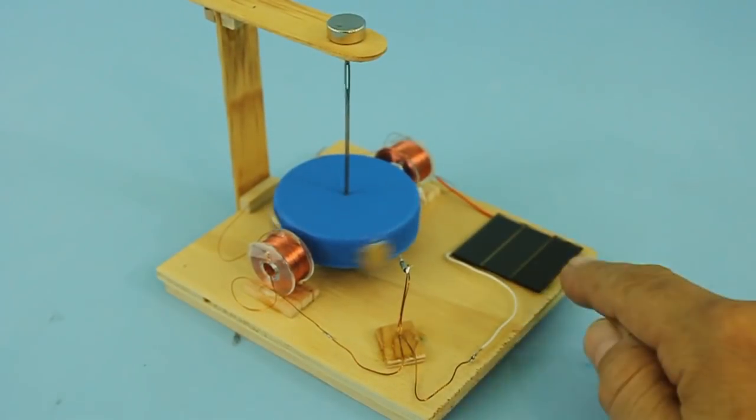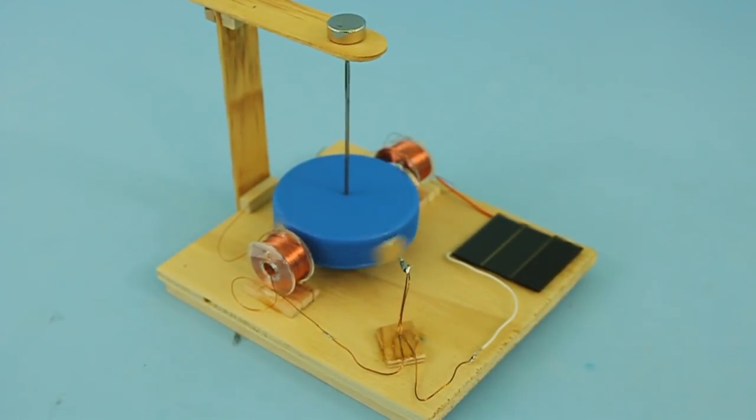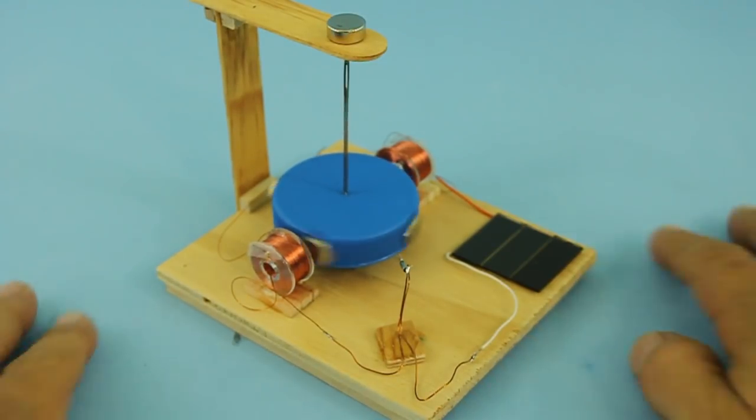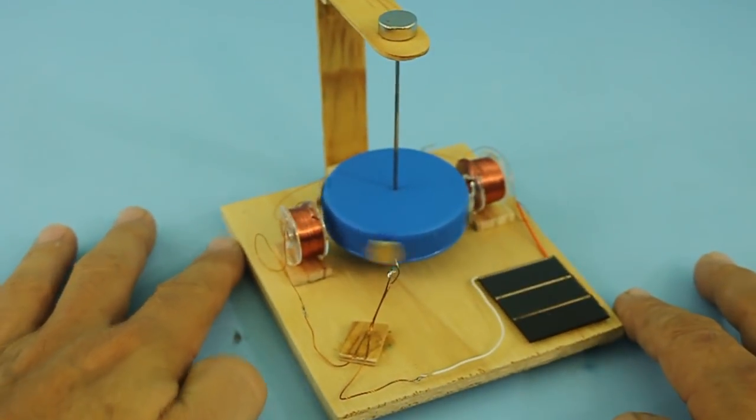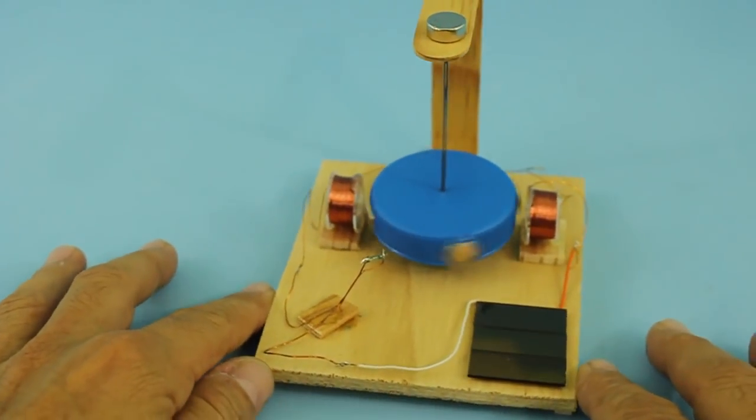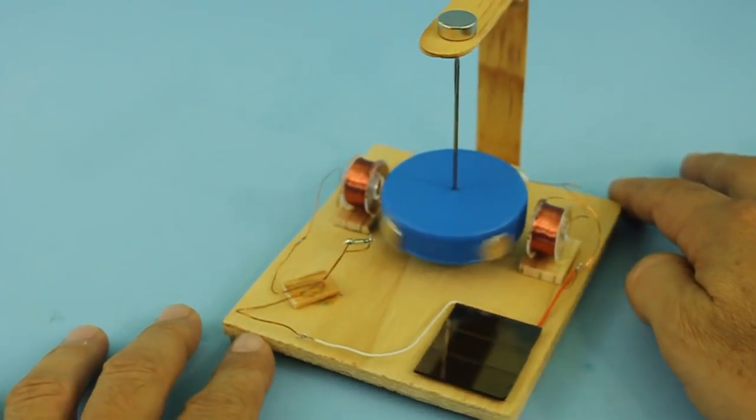I added a small solar cell so that the motor can run autonomously. It doesn't need direct sunlight, it works pretty well with the light from the room.